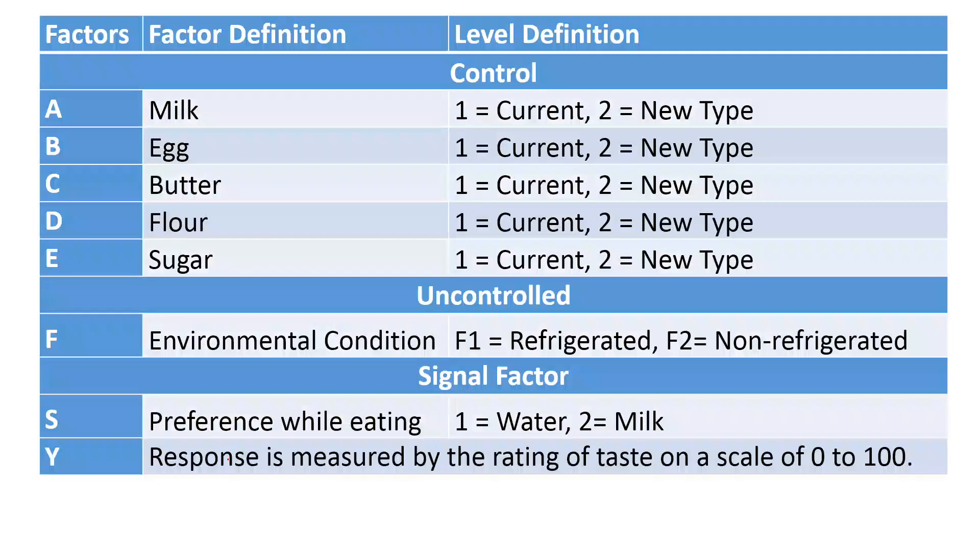Let me give you an example. Think about baking a cake. This cake baking company is trying to see the opportunity of a new type of milk, egg, butter, sugar, and flour to see if they can adopt better materials with better prices. They're including these five factors in their study, plus two environmental conditions: refrigerated or room temperature. They're also including one signal factor - when the user eats the cake, are they using water or milk as a drink? The response is measured on a scale of zero to 100, where 100 means the best delicious cake and zero means you can't eat it.